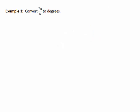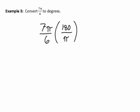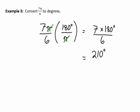We can work backwards too. To convert 7π/6 to degrees, we take our value in radians — 7π/6 — and multiply by the conversion factor 180 over π, since we want to get rid of radians and keep degrees. The π's cancel out, and we have 7 times 180 degrees divided by 6. Simplifying that gives us 210 degrees. So 7π/6 radians equals 210 degrees.